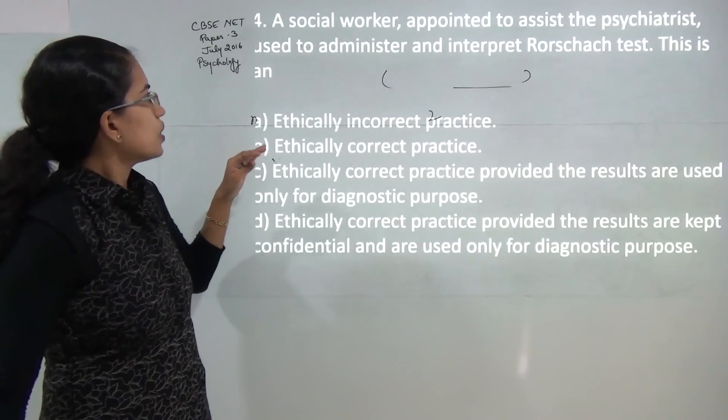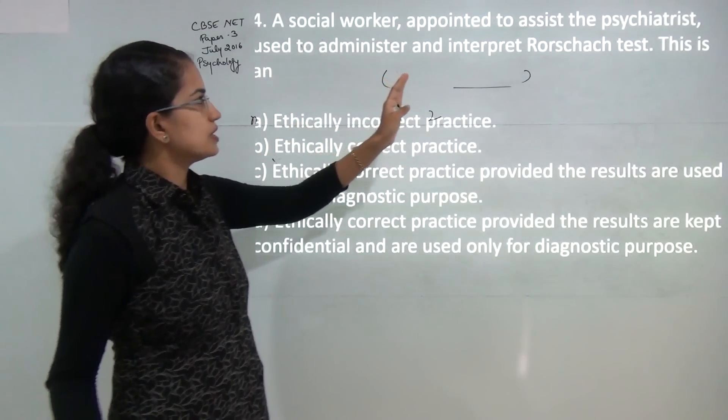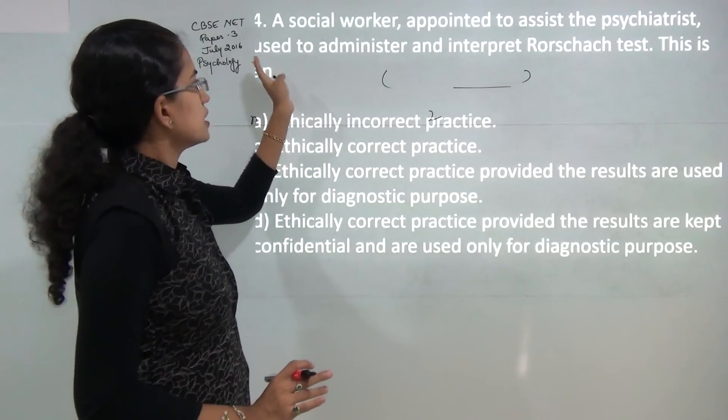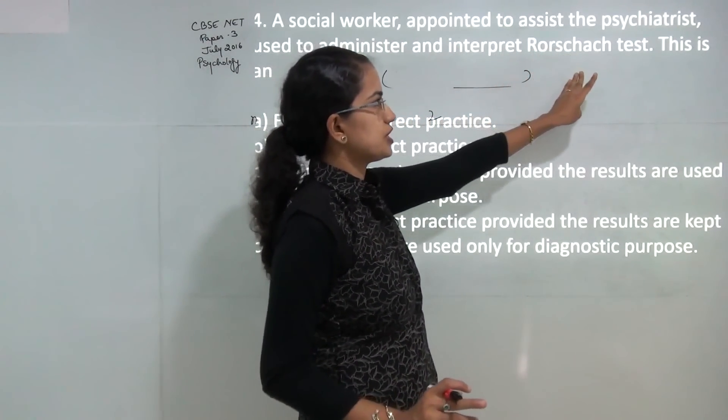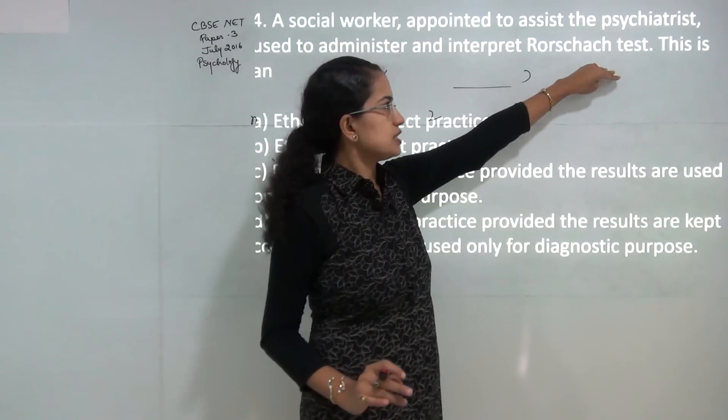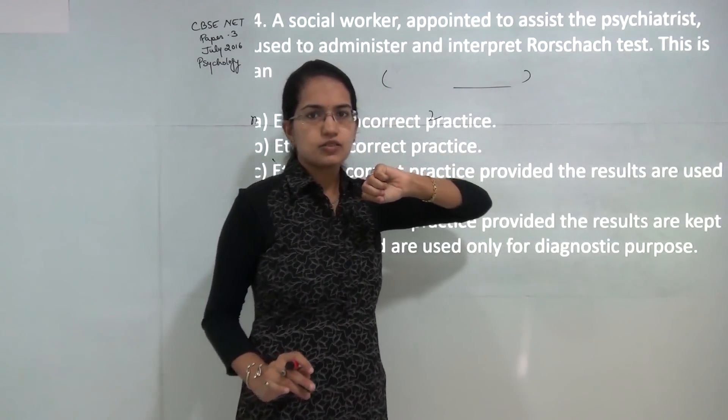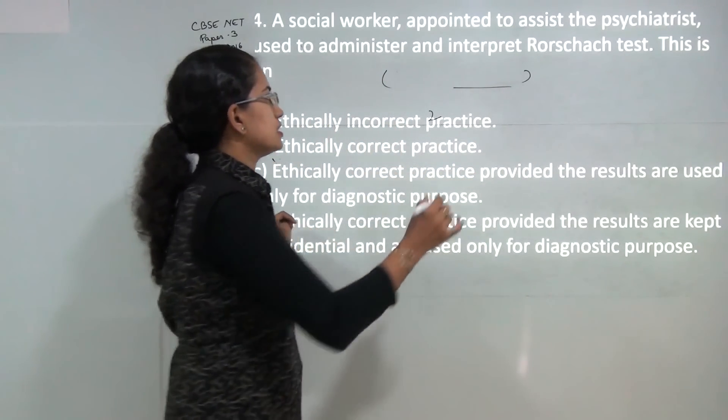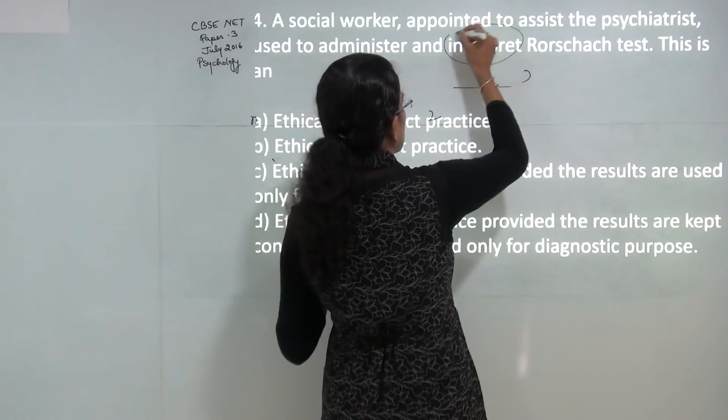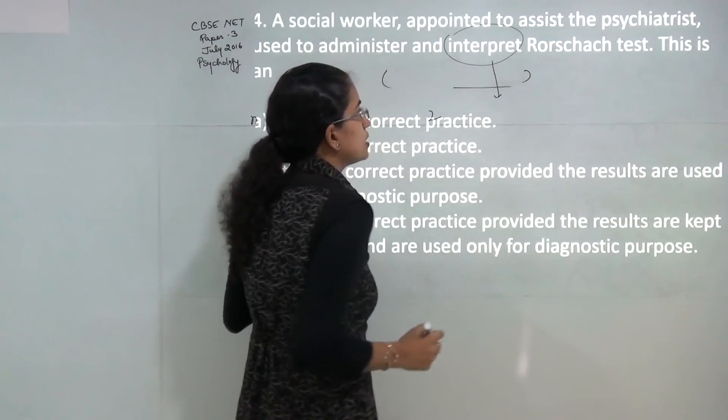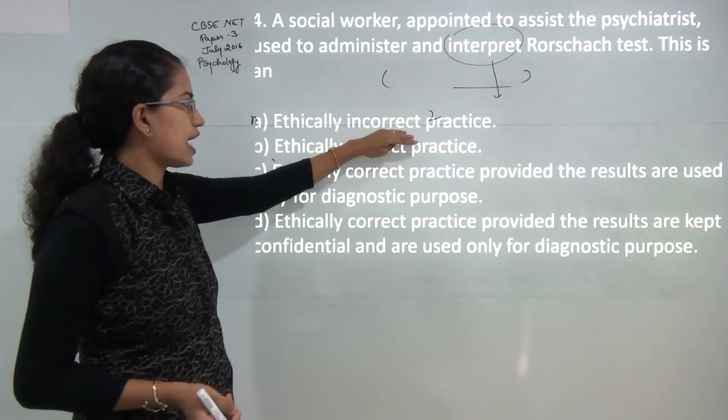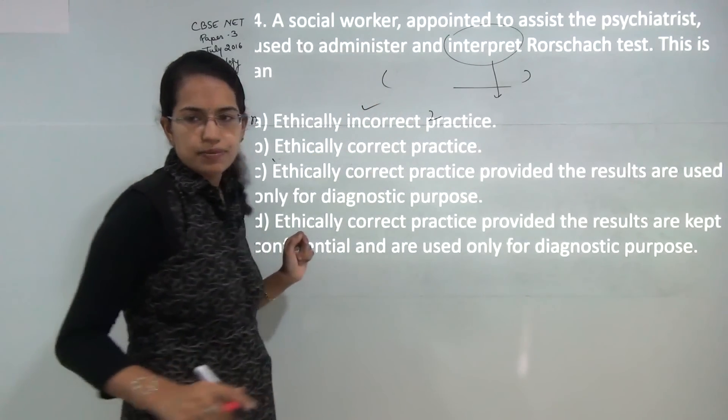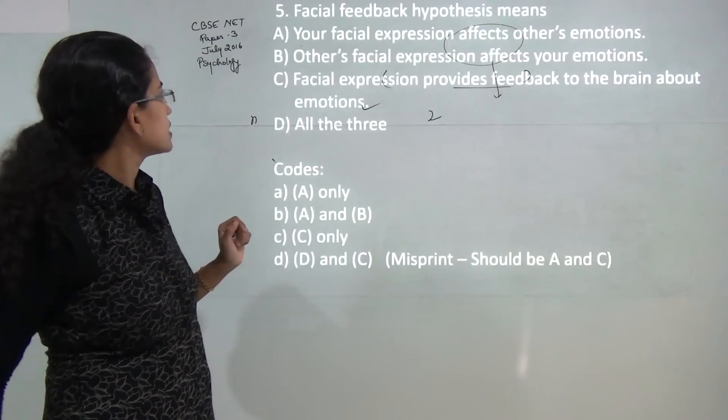Next question: you have a social worker who is appointed to assist the psychiatrist. He administers and interprets the Rorschach test. Now Rorschach test is a projective personality test and interpretation of such personality tests in psychology can be done only by psychologists. A social worker doing so would be considered incorrect or unethical practice. So one would be the correct answer here.